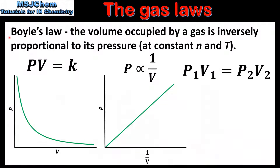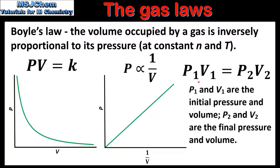We'll start by looking at the relationship between pressure and volume at constant temperature, also known as Boyle's law. This states that the volume occupied by a gas is inversely proportional to its pressure. In equation form, Boyle's law can be represented in three ways: pressure multiplied by volume equals a constant K; pressure is directly proportional to 1 over volume; and P1 multiplied by V1 equals P2 multiplied by V2.